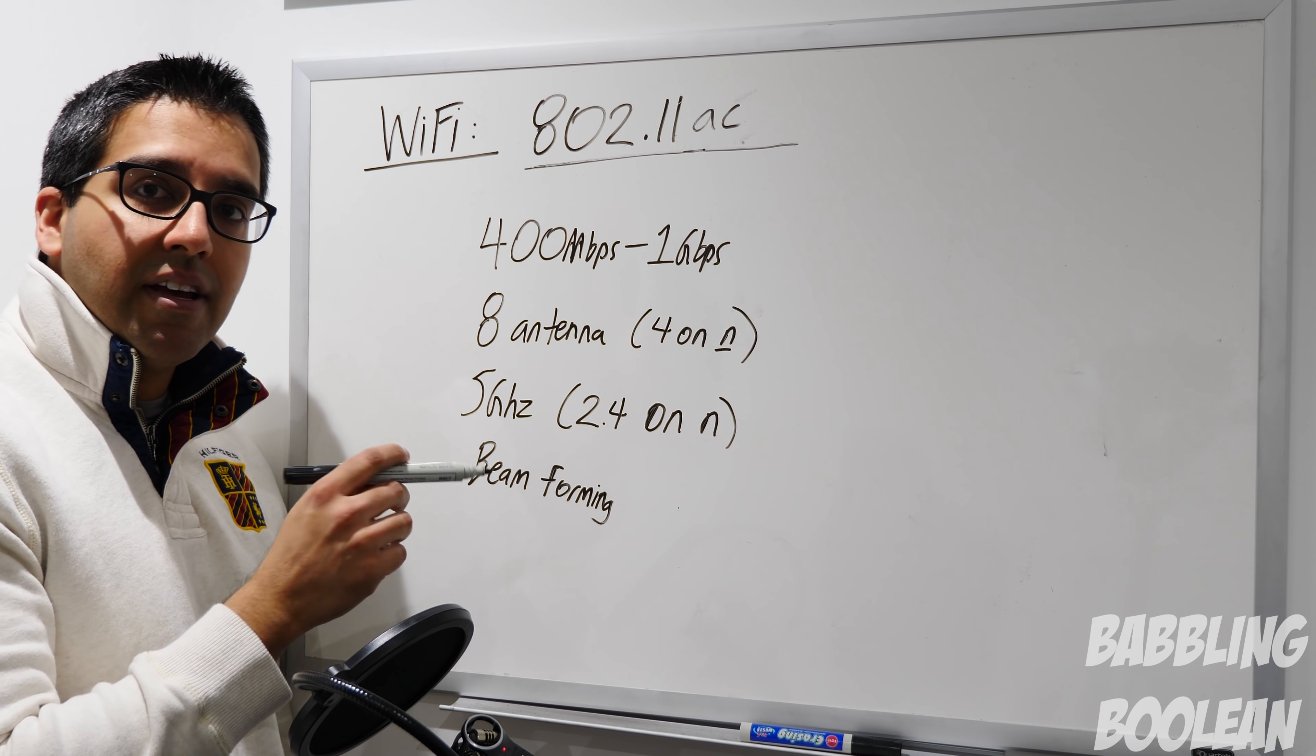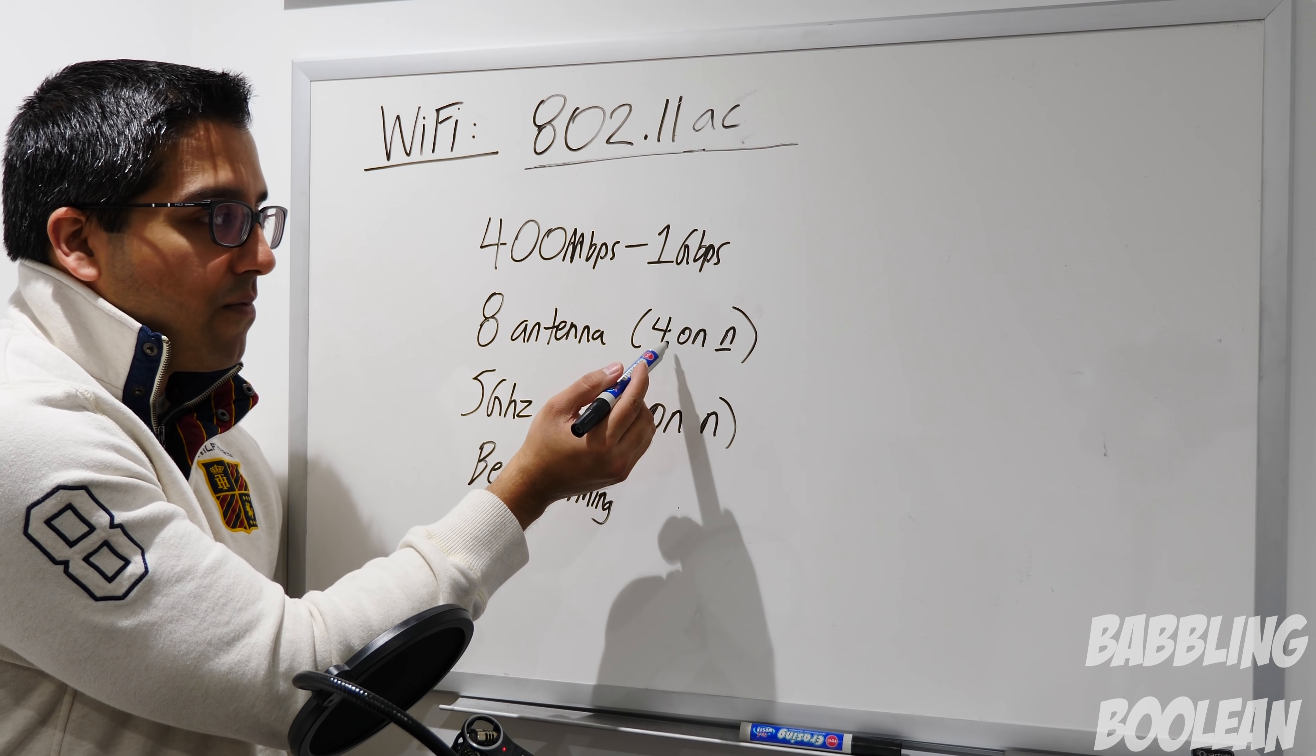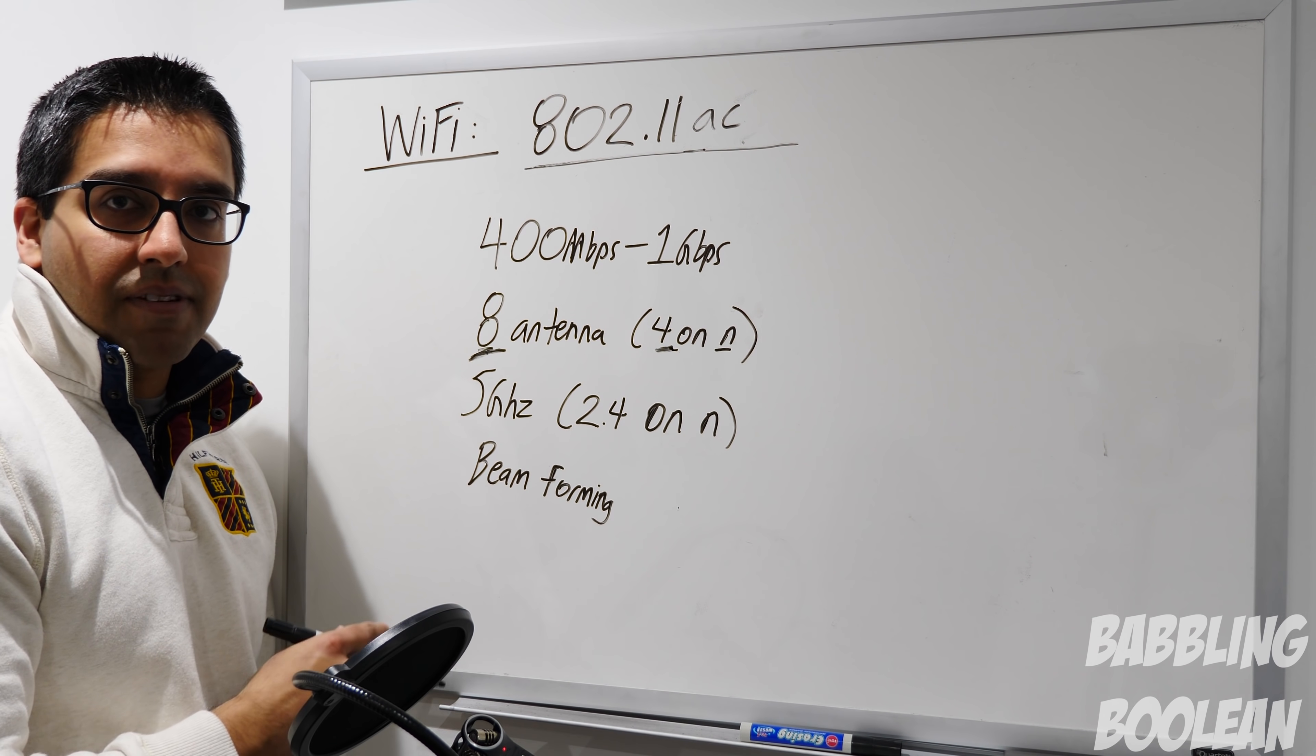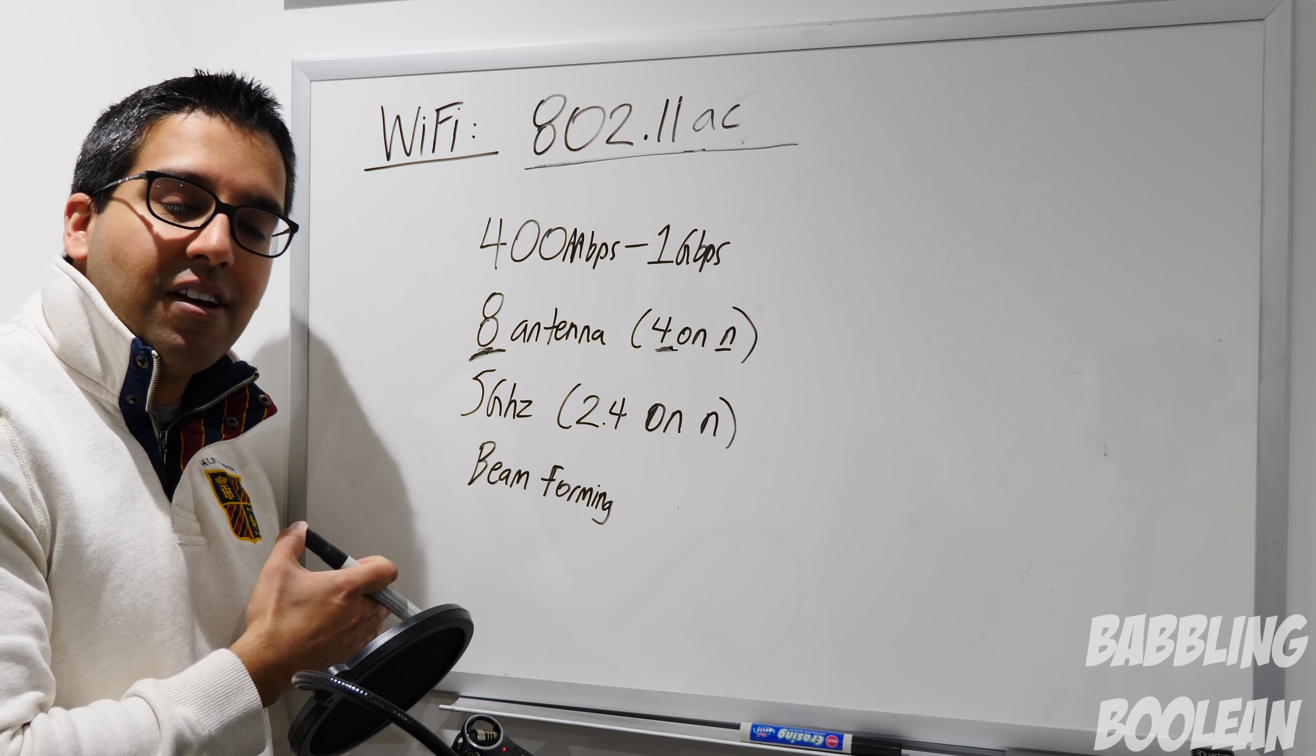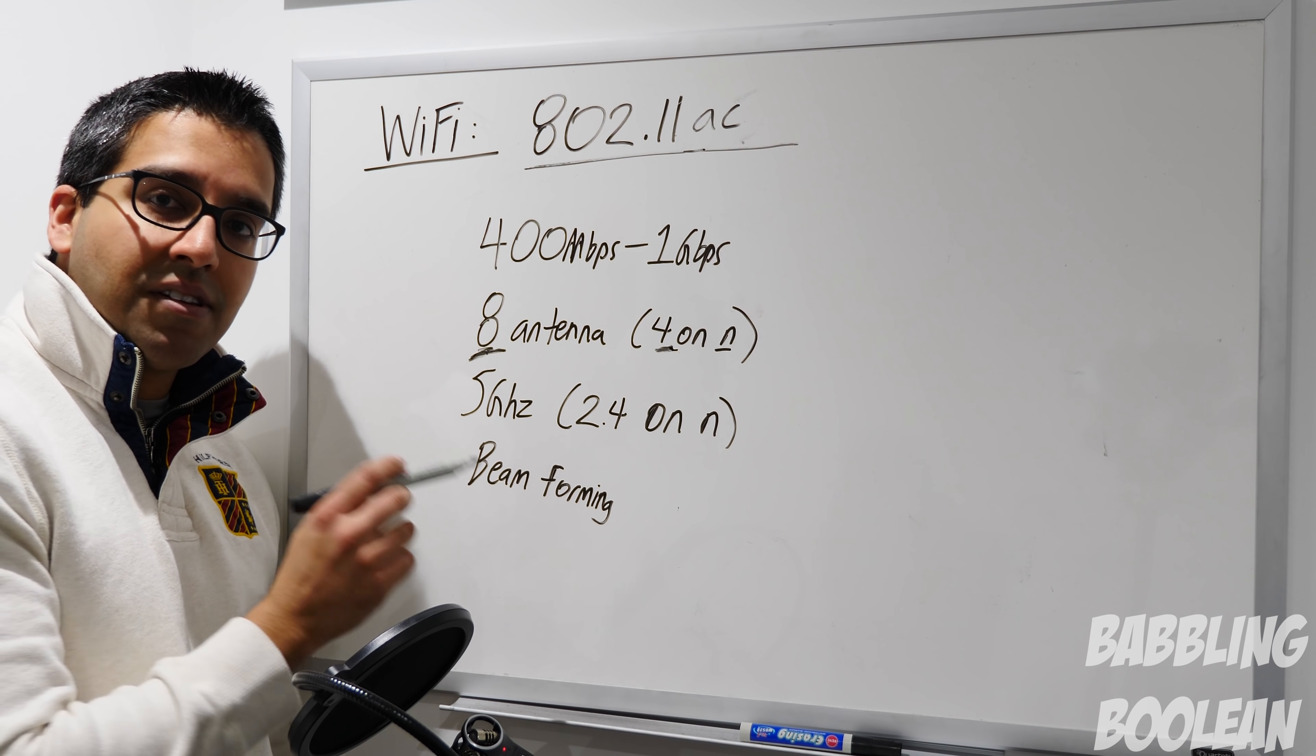The other thing is that Multiple Input Multiple Output - it still supports it on AC. Whereas N had four streams and antennas, you might not see them all on devices, but it could support up to eight, which means more devices and more people connecting to an AC router with less signal conflicts, which means better data transfer.